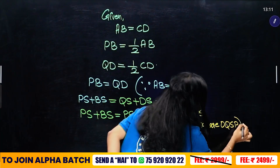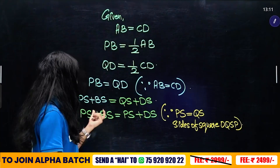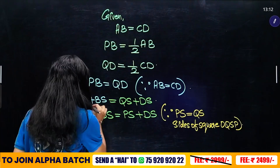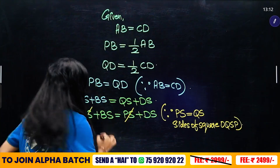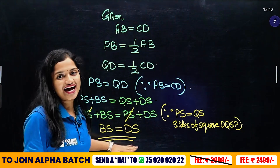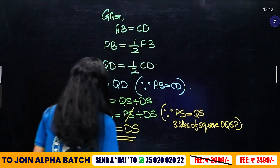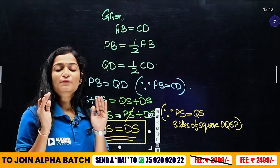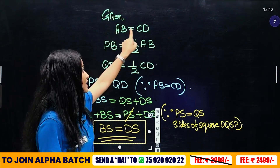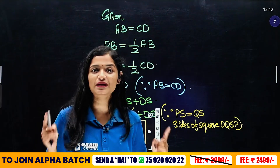PS is equal to QS. Then we have PS plus BS is equal to PS plus DS. In two stages, PS on both sides will cancel. Then what do we say? BS is equal to DS. This is what we say to prove. BS is equal to DS — that is the result, and we are perpendicular to the center; this chord is bisecting.